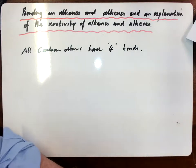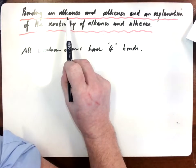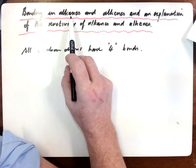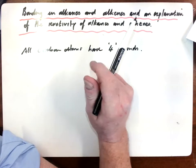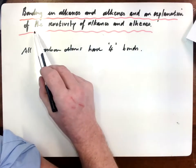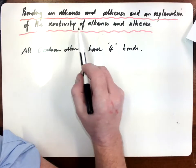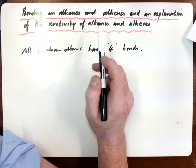We're going to have a look at the bonding between the carbon atoms of an alkane and an alkene, and then we're going to use an explanation of that bonding to explain the differences in reactivity between alkanes and alkenes.